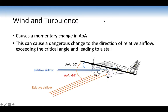That's why the stall speed is 50 knots without flaps but 44 with flaps. Flaps also increase our forward view. We have a threat in this lesson of not verbalising the white arc — extension above VFE will cause airframe damage, so make sure you verbalise the white arc. Wind and turbulence causes a momentary change in angle of attack, which can cause a dangerous change in the direction of relative airflow, exceeding the critical angle and leading to a stall.